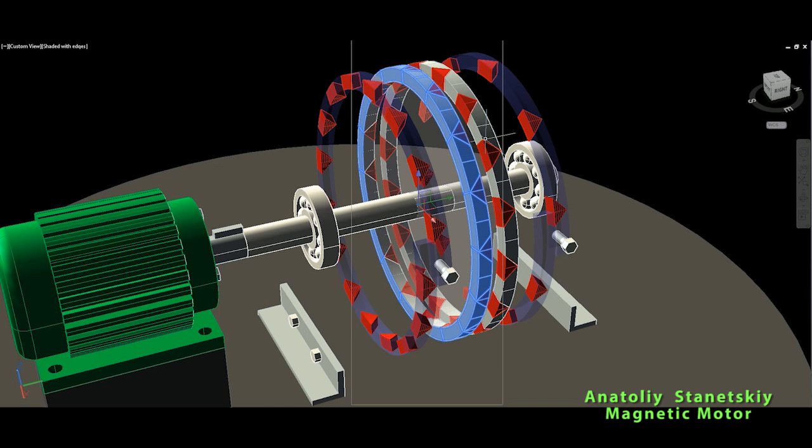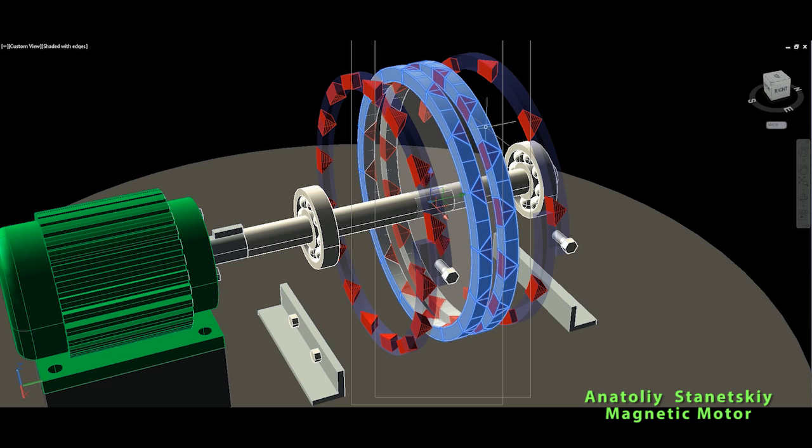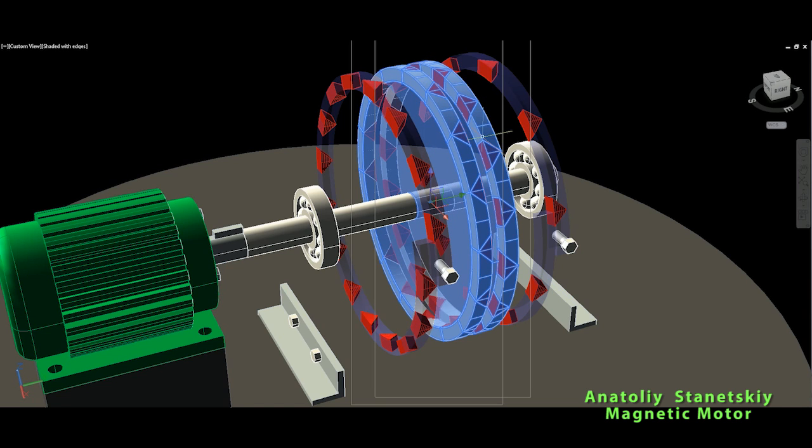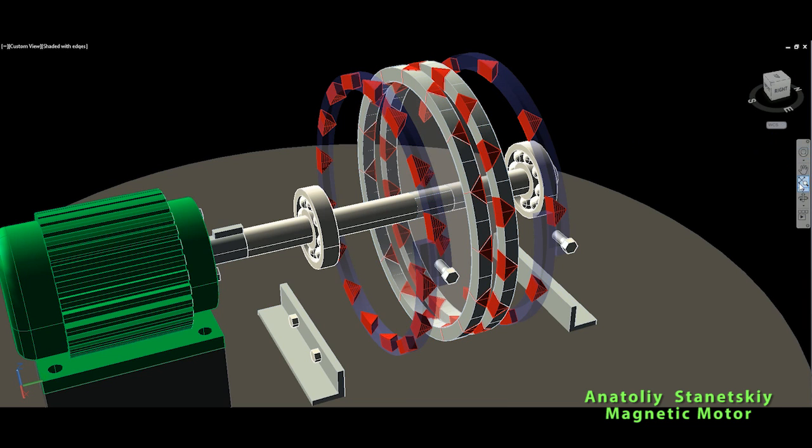And in the middle there is, of course, our rotor with 16 magnets, so opposite polarities. And in the middle it's a circle on which these stator magnets are mounted. So that's it.